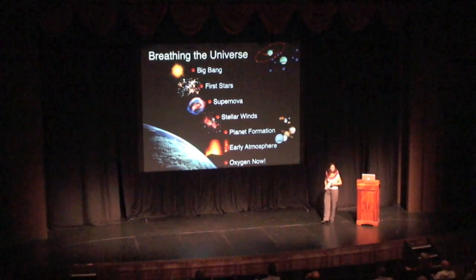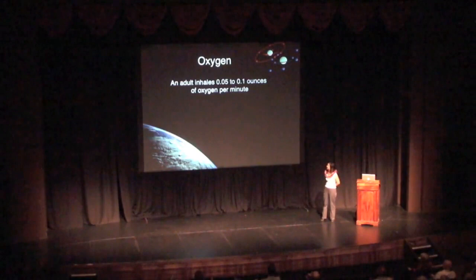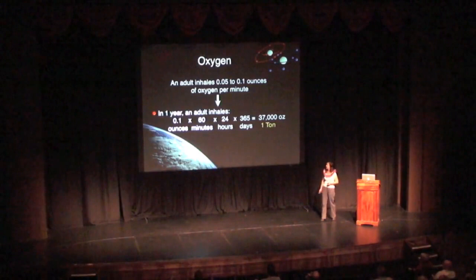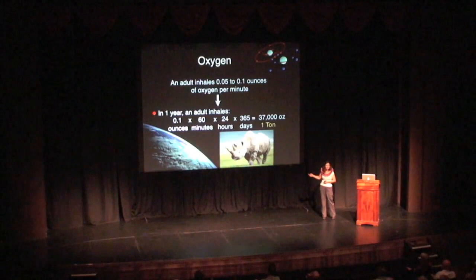First, just a little bit about oxygen you might not know. You're of course breathing oxygen right now and you actually breathe about 0.05 to 0.1 ounces of oxygen per minute. If you do a quick math calculation and work out how much that is in a year, you're actually inhaling about a tonne of oxygen in a year. A tonne is about the weight of a rhinoceros or maybe a small elephant.